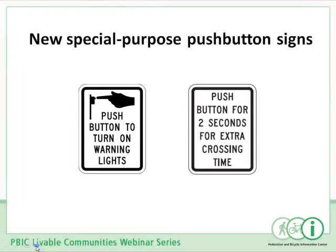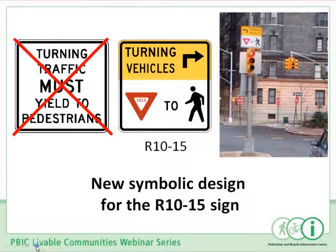There are also a couple of new special-purpose pedestrian signs. The one on the left is for use with in-roadway warning lights. The one on the right is for use where push-buttons have an extended button push that calls for additional features during the next cycle, perhaps extra crossing time. The R10-15 sign has been changed to a more symbolic design to make it more conspicuous to road users — a design successfully tested and used by New York City.